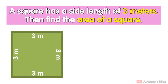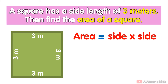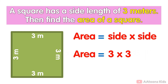Example: a square has a side length of 3 meters, find the area of the square. Area of a square equals side multiplied by side. The side of the square is 3 meters. Put the value in the formula: area equals 3 multiplied by 3. After multiplying, the result is 9.